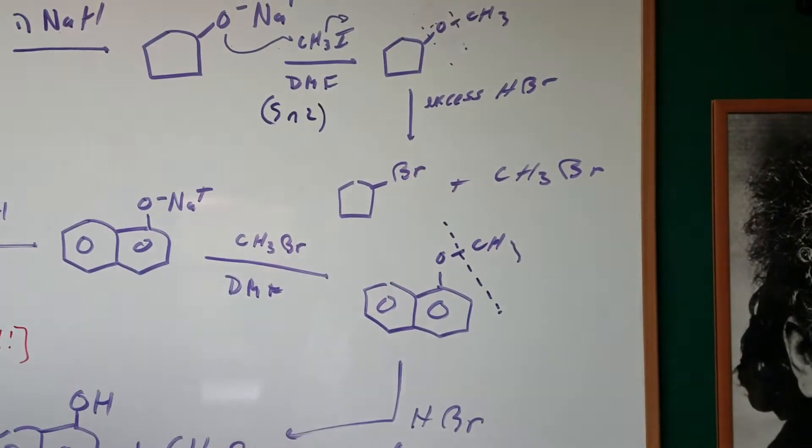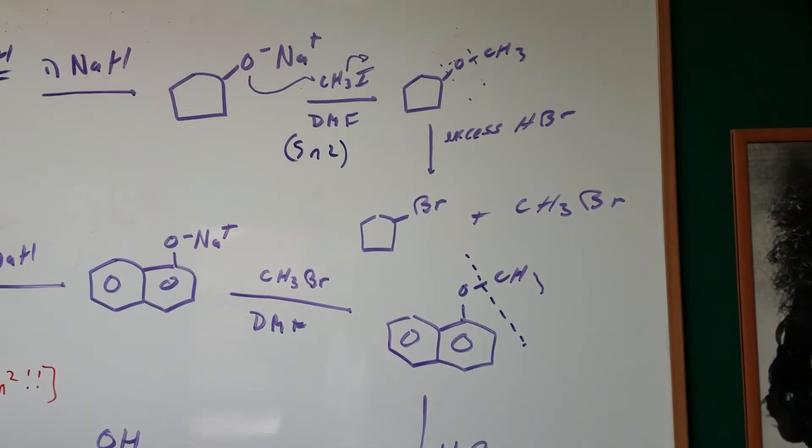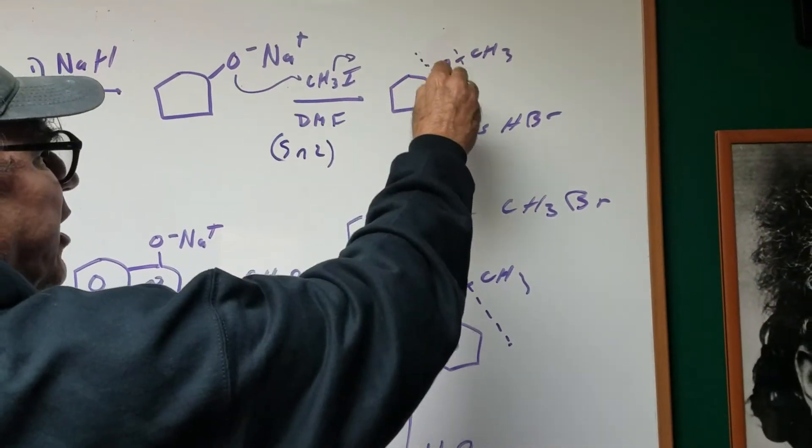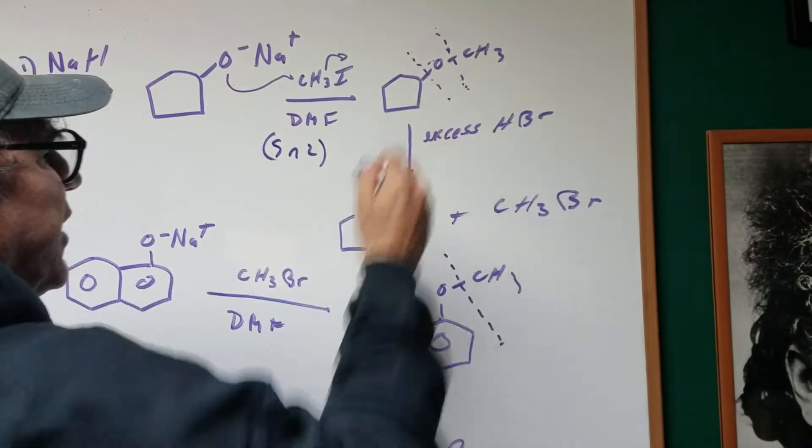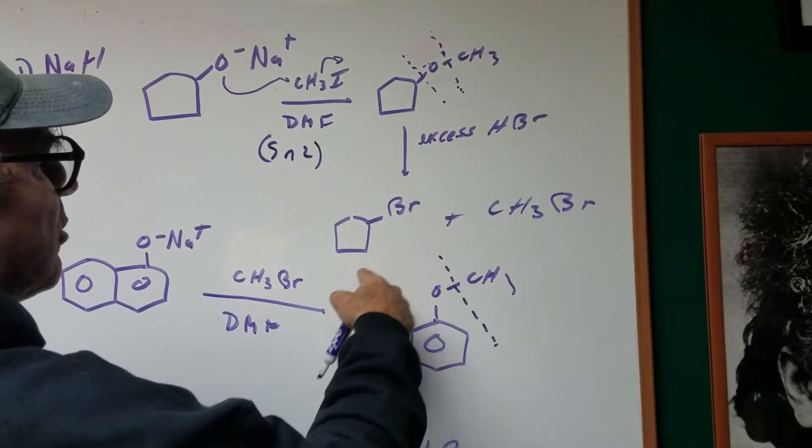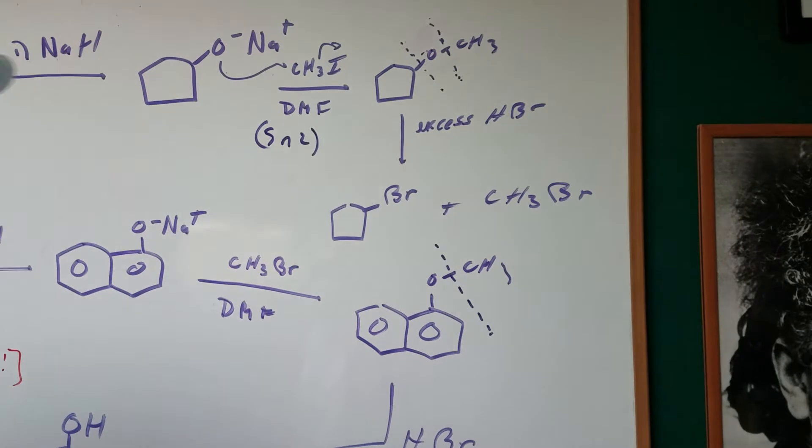Then what I'm going to do is treat it with excess HBr and what that's going to do is it's going to cut it on both sides of the O and you're going to get cyclopentyl bromide and methyl bromide.